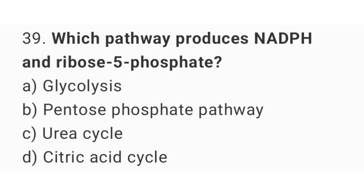Question number 39: Which pathway produces NADPH and ribose phosphate? The right answer is option B: Pentose phosphate pathway.